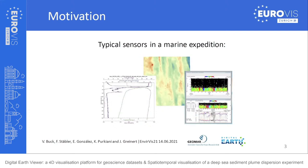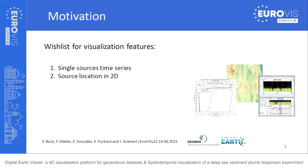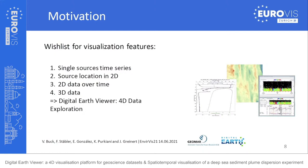First, single sensor time series data — for example, a CTD cast where salinity and temperature change with depth, or ADCP casts with different current directions and strength over time. Then source location in 2D, which is really important: where was the CTD cast, where was the ADCP, where was the ROV. Then 2D data over time, like imagery or the output of a temperature model, and 3D data like terrain.